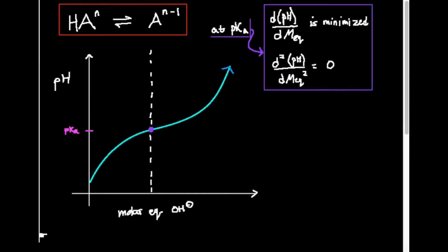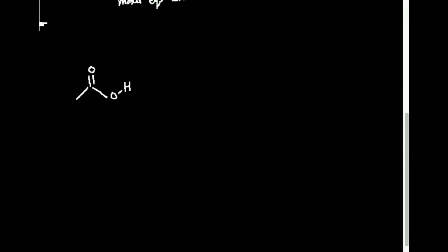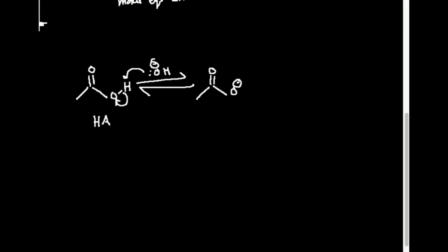An example of this: we can titrate acetic acid with sodium hydroxide, which is our strong base. The hydroxide is the participating species — it removes the dissociable proton from acetic acid. What we end up with is acetate. The weak acid is acetic acid; the dissociable hydrogen has a charge of zero overall. Acetate has had its hydrogen removed, and since the proton joins hydroxide to make water, the charge is reduced by one: zero minus one equals minus one.